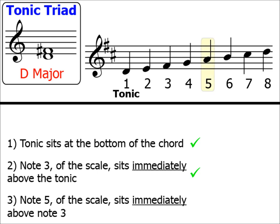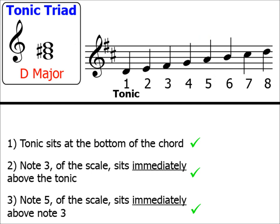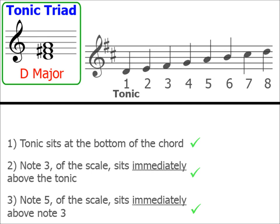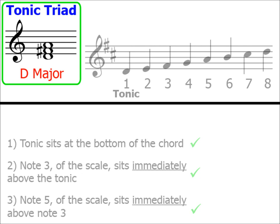Step 3: we take note 5 — the A — and pop that onto our tonic triad. Let's take the stave away to ensure that they look like balancing balls. They do. Here's our tonic triad for D major: D, F sharp, and A.